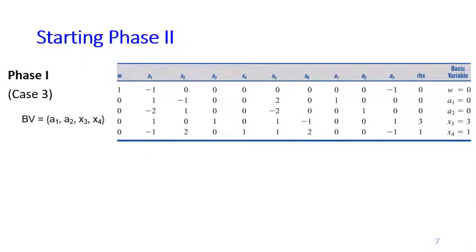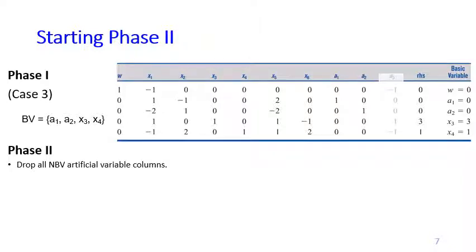From the previous slide, the optimal phase one table falls into case three, with basic variables a1, a2, x3, and x4. We now begin phase two. The first step is to drop all artificial variable columns that are non-basic variables. Here, a3 is a non-basic variable in the optimal phase one table, so we delete the column of a3 and will not consider that variable in phase two.